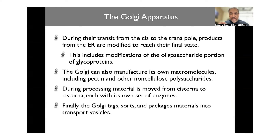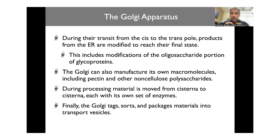Among the modifications that occur as material transits from the cis to the trans end of the Golgi is the addition of sugars — oligosaccharides — to proteins, making glycoproteins. Glycosylation of proteins is one of the major changes, and we now understand that many proteins carry glycosylation modifications that are vital to their functionality. The Golgi accomplishes two things: modifying proteins to optimize their functionality, and ensuring the proteins have all the signals required to be delivered to very specific sites inside the cell.